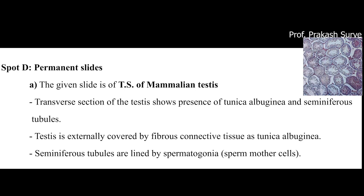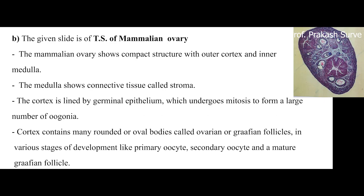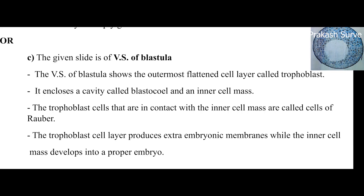Next is spot D, where you have permanent slides. You may have a slide of TS of mammalian testes — either a slide or a photograph, depending on your college. Next may be a TS of ovary slide or maybe a photograph. Next may be a VS of blastula, same — photograph or slide.